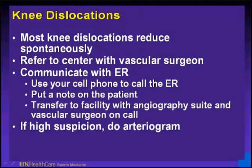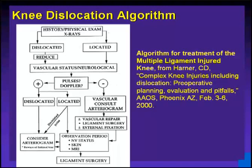Refer to a center with a vascular surgeon. Oftentimes vascular surgeons take every 12-hour shifts, and this is where medical legal suits are made — the orthopedist or family practice physicians get sued because the vascular surgeon may not see the patient often enough and may not appreciate a vascular injury. Communicate with your emergency room; cell phones are good for that. Put a note on the patient, talk to the parents, and transfer to a facility that has a vascular suite. If there is high suspicion, do an arteriogram. Make sure wherever you send them has the ability to look at vascular status with arteriogram, ABIs, and has a protocol for knee dislocation — they may need to be admitted overnight.